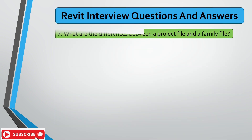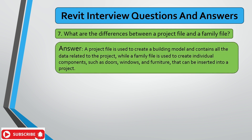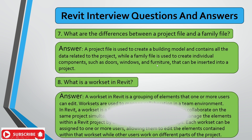The next question is: what is the difference between a project file and a family file? The project file is used to create a building model and contains all the data related to the project. The family file is used to create individual components like lighting, power sockets, electrical equipment, mechanical equipment, furniture, and windows. Family files need to be inserted into the project file to develop the 3D model.